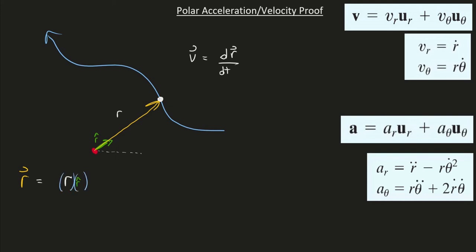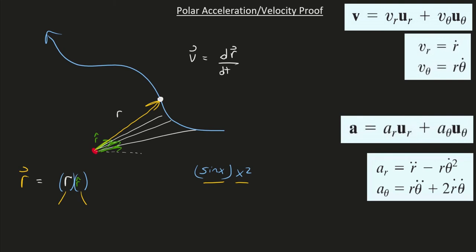Each one of these quantities changes with time, and we can all do the product rule steps. Both of these things change with time — my r has been getting shorter, so that obviously changes with time. And as we can see, that unit vector r̂ has been changing as well, changing direction. Remember, a unit vector is always of length one, so its magnitude isn't changing but its direction is changing. We can see that the angle of r̂ is increasing as our particle travels along that blue line.